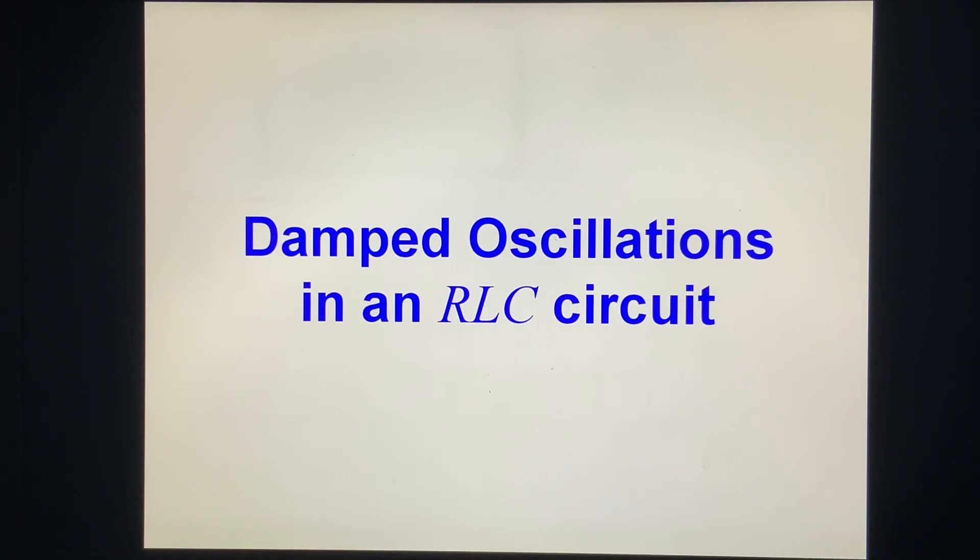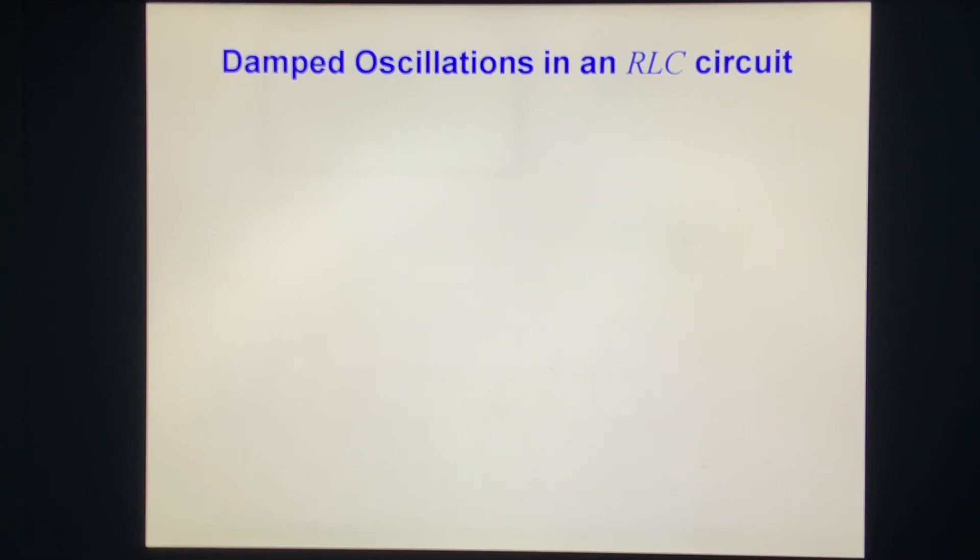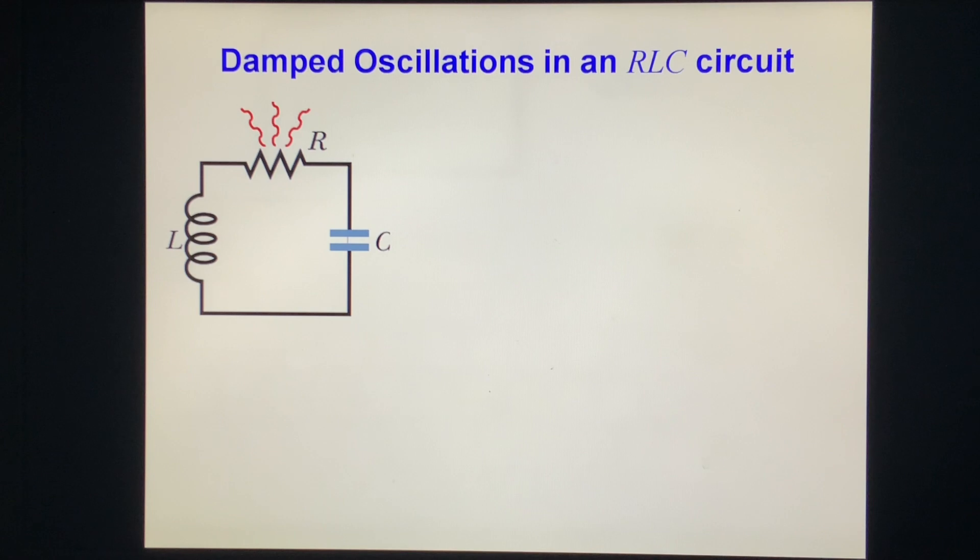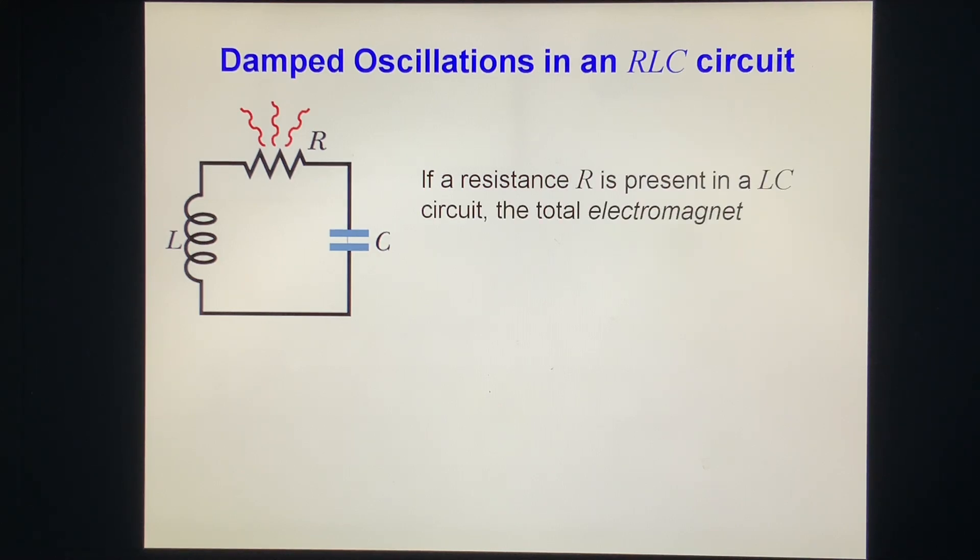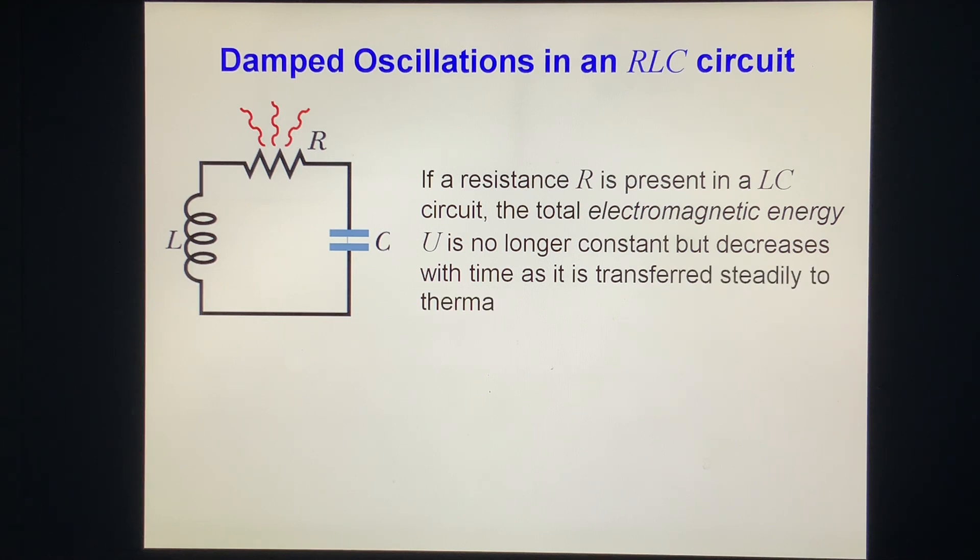Damped oscillations in an RLC circuit. If a resistor R is present in an RLC circuit, the total electromagnetic energy U is no longer constant, but decreases with time as it is transferred to thermal energy in the resistor.